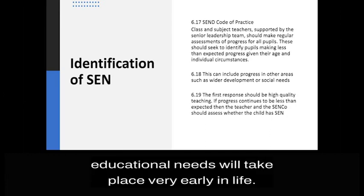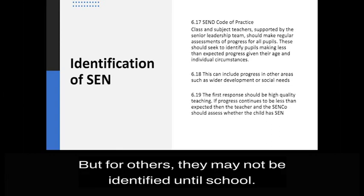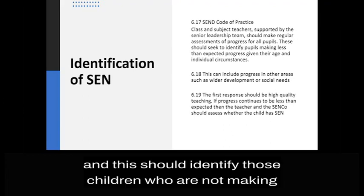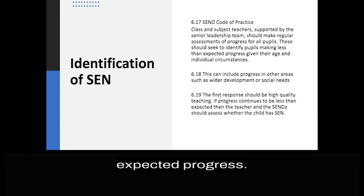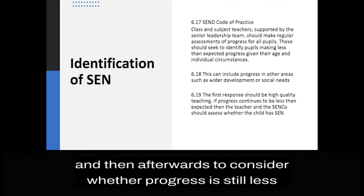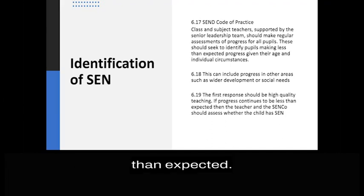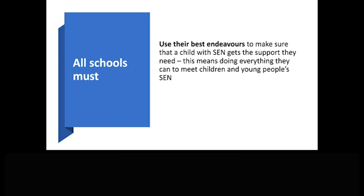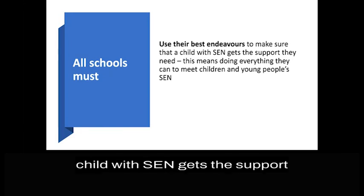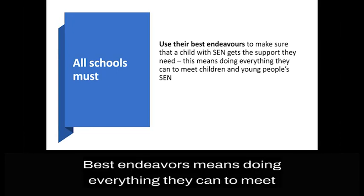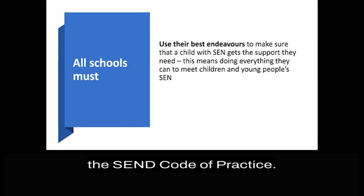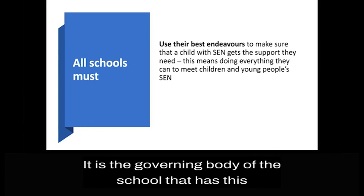For some children, the identification of special educational needs will take place very early in life, but for others they may not be identified until school. All schools will regularly assess the progress of children, and this should identify those children who are not making expected progress. Section 6.19 explains that the first response to this should be high quality teaching, and then afterwards to consider whether progress is still less than expected. All schools must use their best endeavours to make sure that a child with SEN gets the support they need. Best endeavours means doing everything they can to meet children and young people's needs. This is set out in both the Children and Families Act and the SEND Code of Practice, and it is the governing body of the school that has this responsibility.